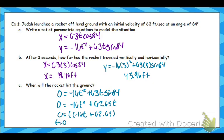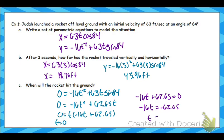So t equals 0 — that's when we're starting. Then for the second factor, set that equal to 0, and I get that t is equal to negative 62.65 divided by negative 16. And I get 3.92 seconds.